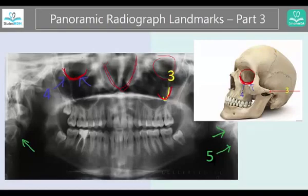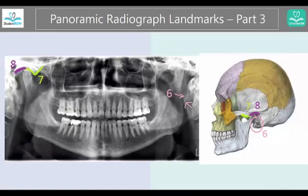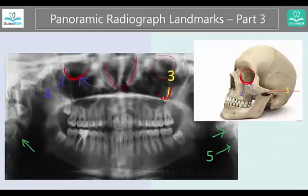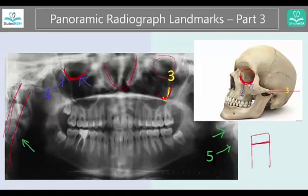Now let's look at number five, which was the spine. If the patient is curving or biting a little too forward — in your bite block there is a notch — ask the patient to put their anterior teeth right there. Because if they are biting a little more forward, the spine will be in the way and it would be captured on both sides. So this area is fine.